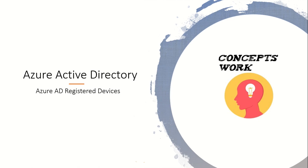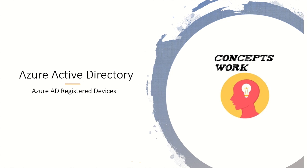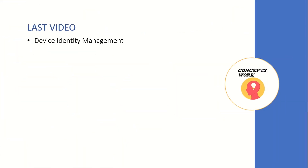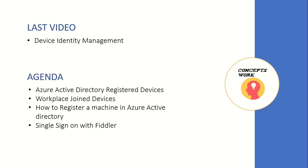Hi guys, hope you all are doing well and welcome back to our series on Azure Active Directory. In this video I'm going to talk about Azure AD registered devices. In the last video I discussed the device identity model - what kind of device identities exist and the three different types. The agenda for this video will be knowing what an Azure AD registered device or workplace joined device is.